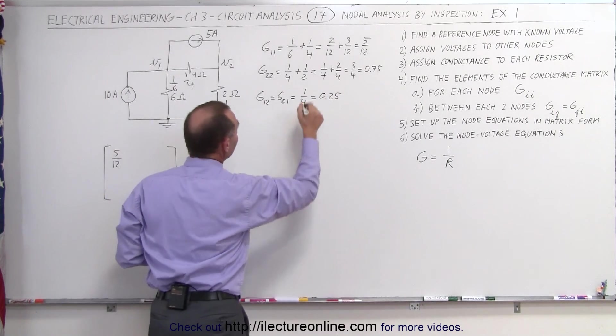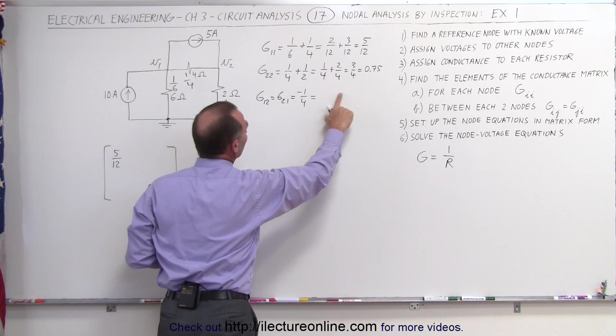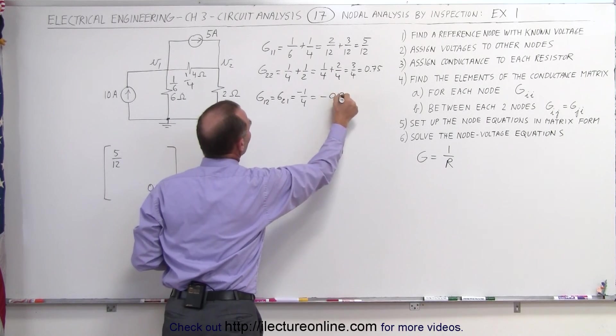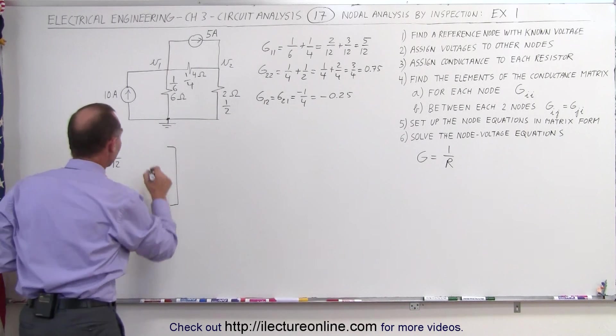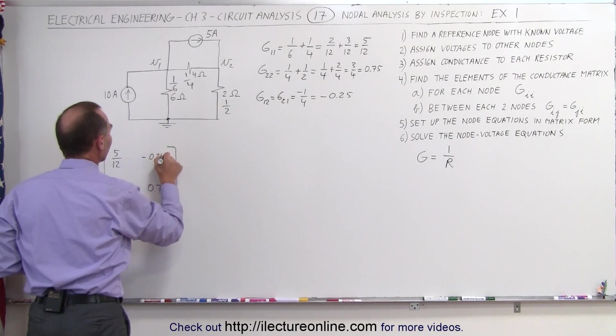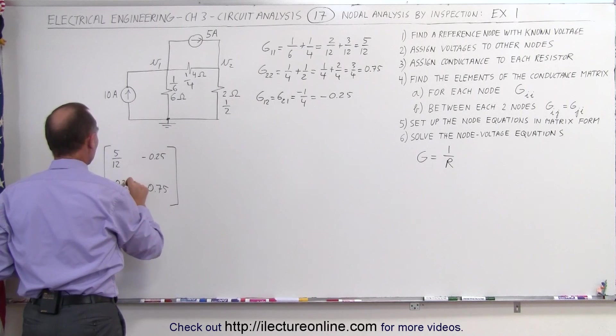Now be careful, one more thing. That should be the negative value of that, so let me leave one more room here. So it's negative 0.25, that's very important. If you don't put the negative in there, you will not get it correct. Minus 0.25, and minus 0.25.